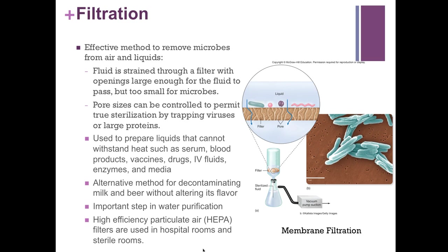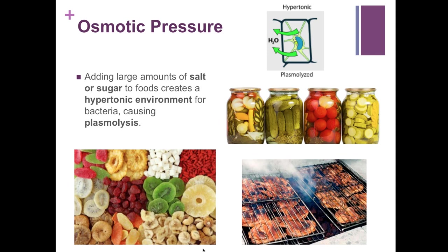Osmotic pressure is when we add large amounts of salt or sugar to foods to create a hypertonic environment for bacteria, causing plasmolysis — water leaving the cell causing it to shrink. We can do this by pickling certain foods, smoking foods, or drying foods like dried cranberries, bananas, kiwis, and pineapple. These methods have been used for centuries to preserve food, although osmotic pressure is never a sterilizing technique.